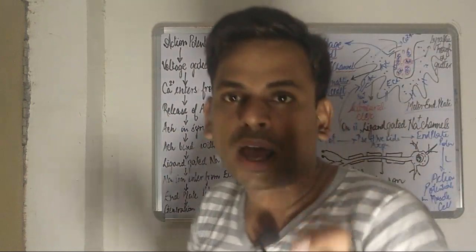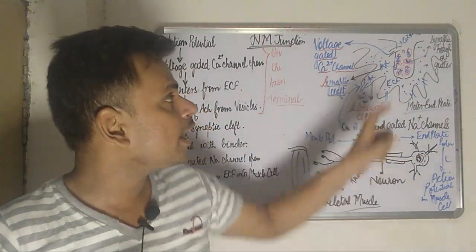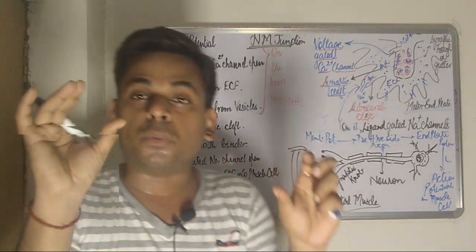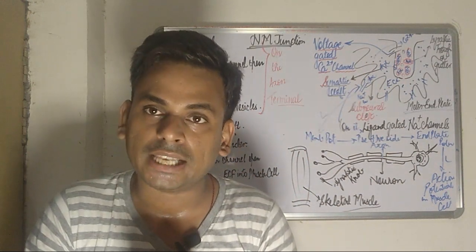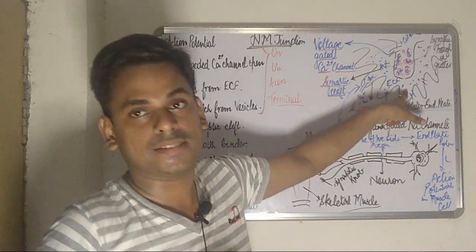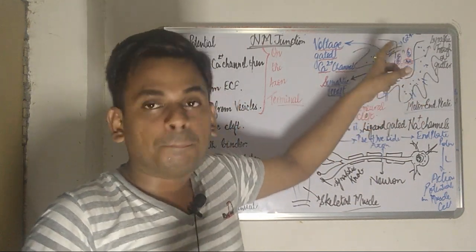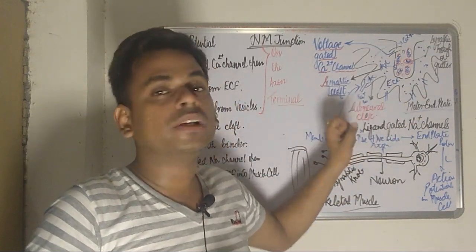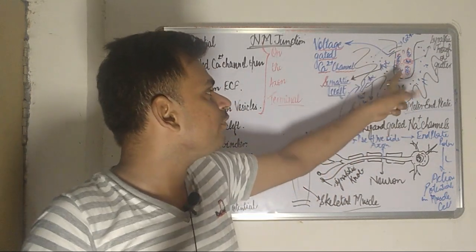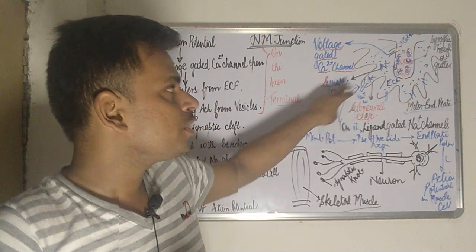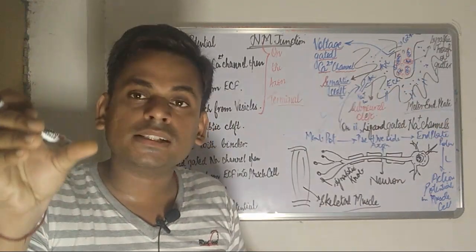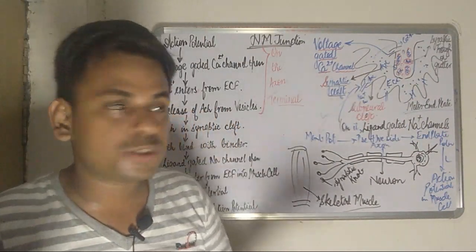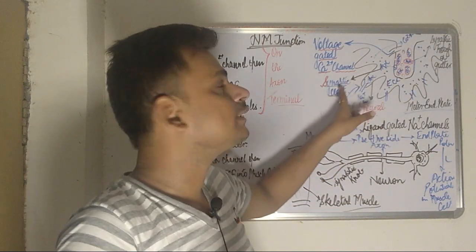On entry of the calcium ions into the synaptic trough or synaptic gutter, the vesicles containing the acetylcholine release the acetylcholine by the process of exocytosis into the subneural space, that is the synaptic cleft. The vesicles containing the acetylcholine merge and ultimately rupture, releasing the acetylcholine into the synaptic cleft.